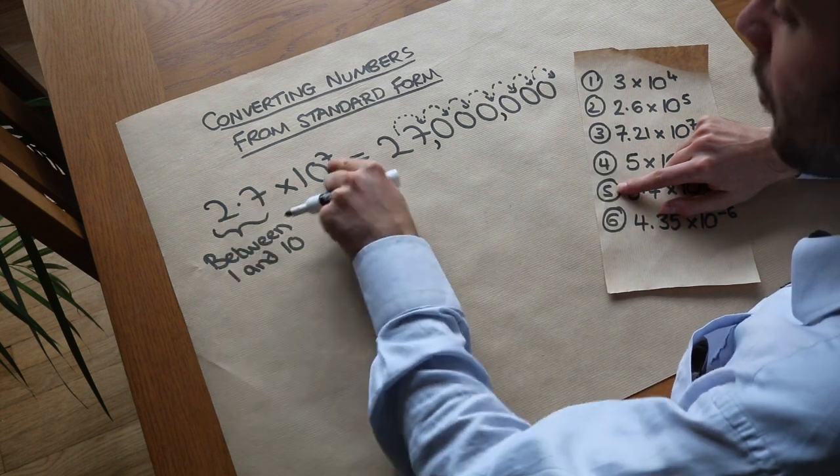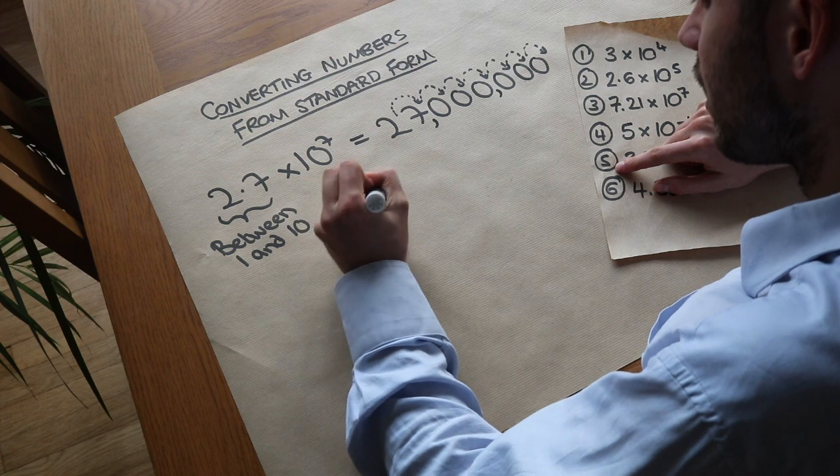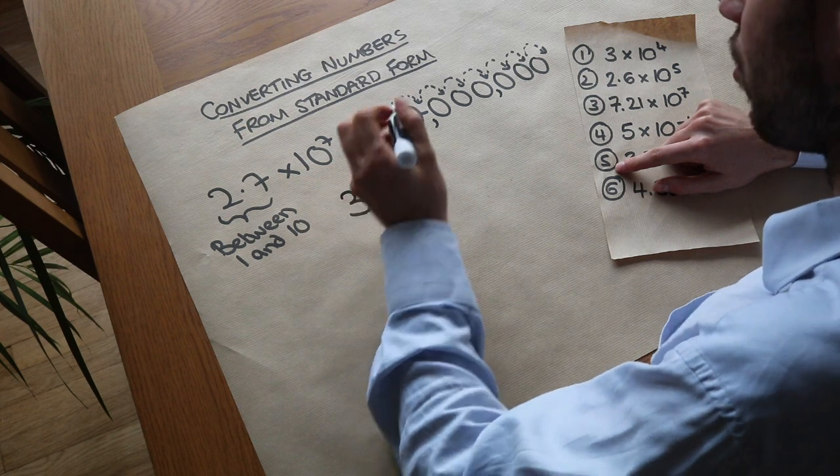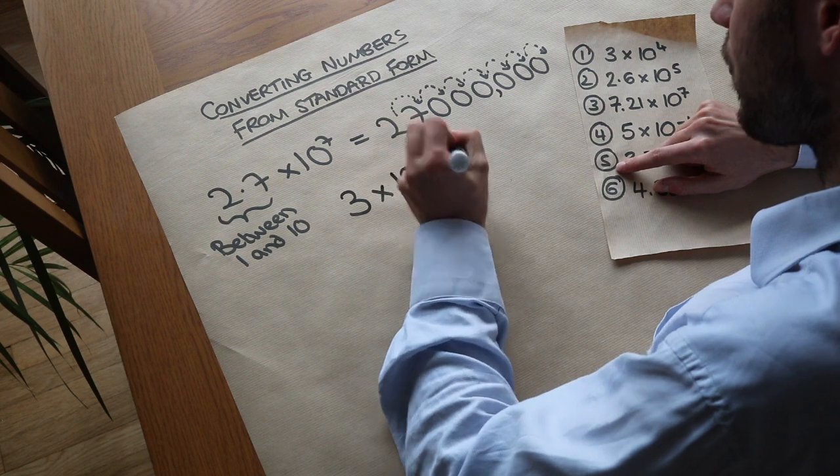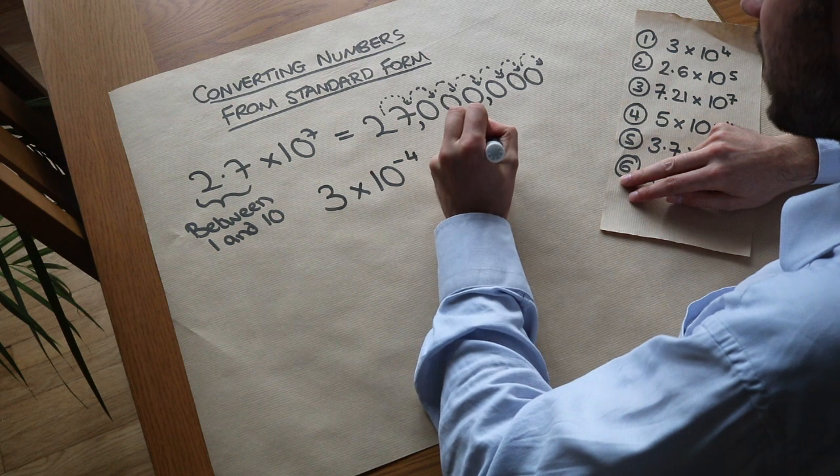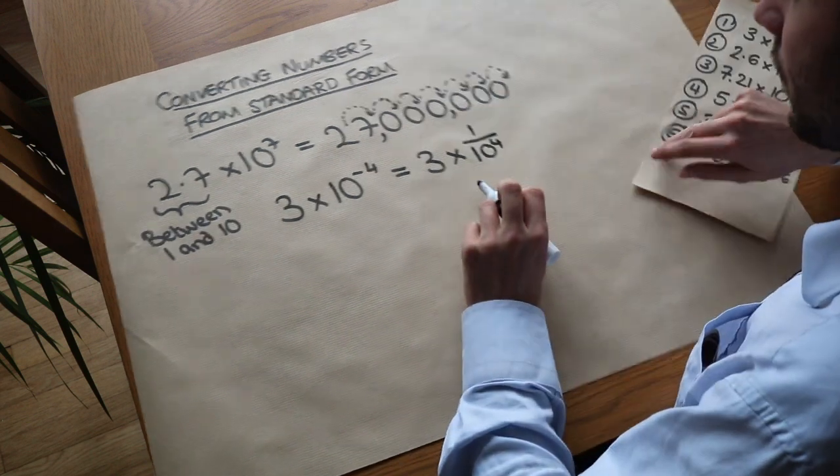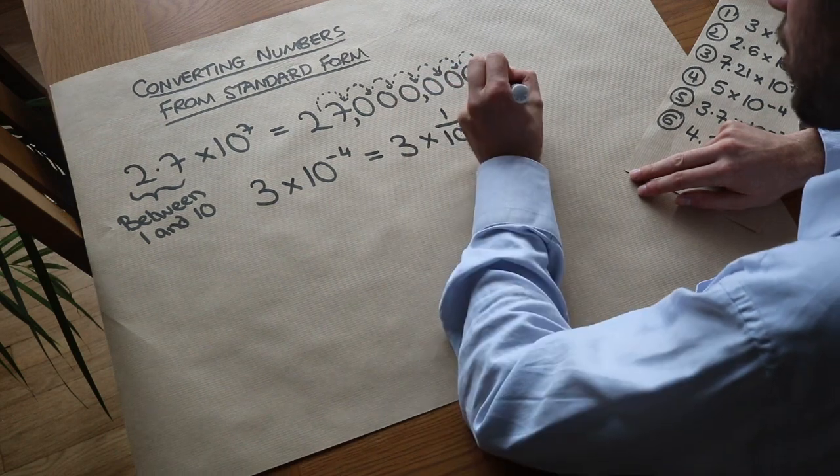What about if it's a really small number because we have a negative index? So if I had say 3 times 10 to the power of minus 4. Remember when you have a negative power that means you do 1 over it, so it's almost like 3 times 1 over 10 to the 4. That is equal to 3 over 10 to the 4.